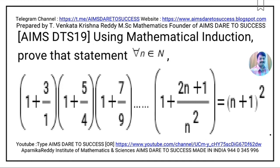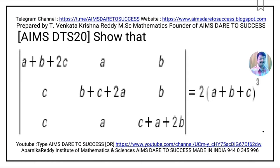Question 19: By using mathematical induction, prove that for all n belonging to N (natural numbers): (1 + 3/1)(1 + 5/4)(1 + 7/9)···(1 + (2n+1)/n²) = (n+1)². Prove this using the mathematical induction concept. This question is from Mathematical Induction.